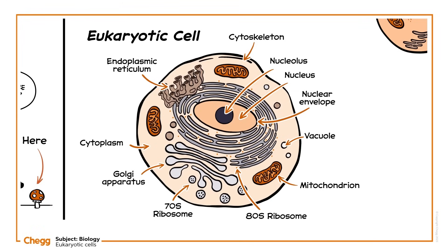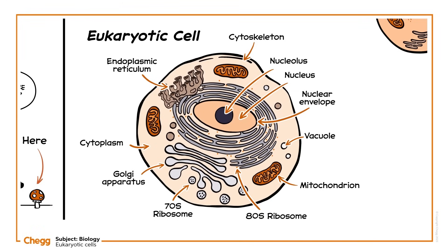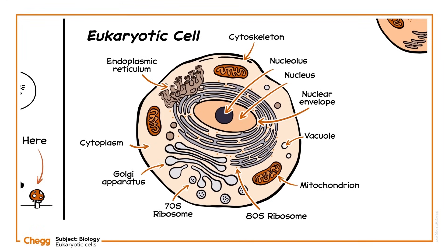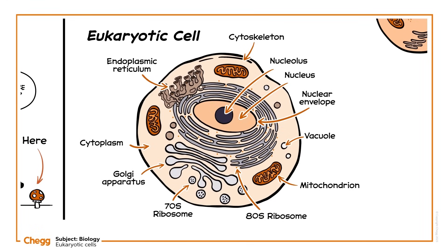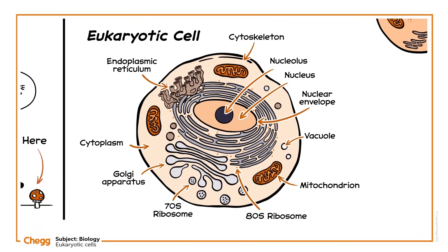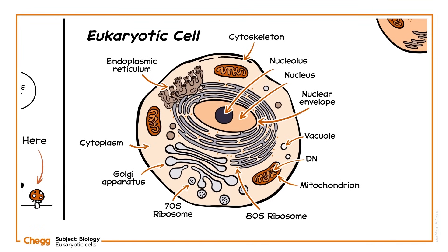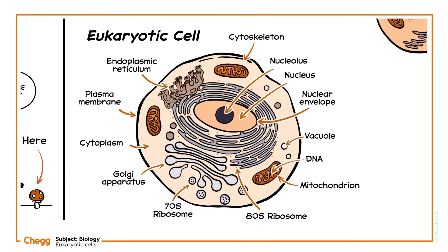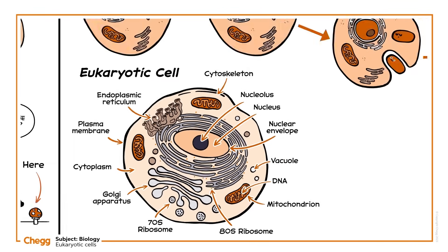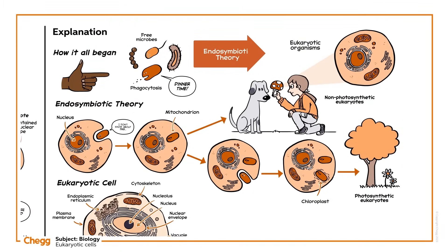Looking closely, we can see evidence supporting the theory that the mitochondria and chloroplasts evolved from endosymbiosis. There are similarities between bacteria, mitochondria and chloroplasts: they're similarly sized, they all have their own circular naked DNA and ribosomes, and are surrounded by their own plasma membranes. Based on the evidence available, endosymbiotic theory is the best explanation for the origin of eukaryotic cells.